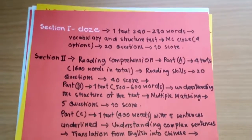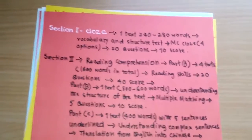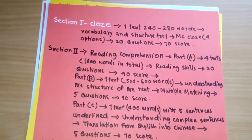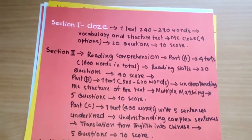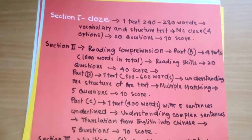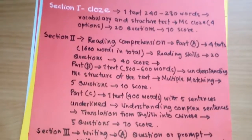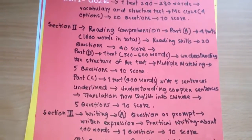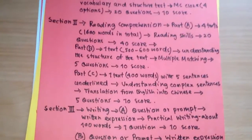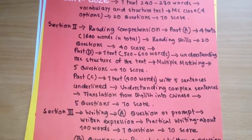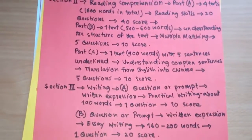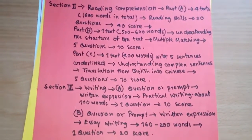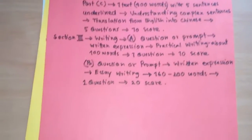Part B tests understanding of text structure through multiple matching, five questions, 10 marks. Part C: one text of 400 words with five underlined complex sentences for translation from English into Chinese, five questions, 10 marks. Section 3 Writing: Part A is a practical writing task of about 100 words, one question, 10 marks. Part B is an essay writing task of 160 to 200 words, one question, 20 marks.